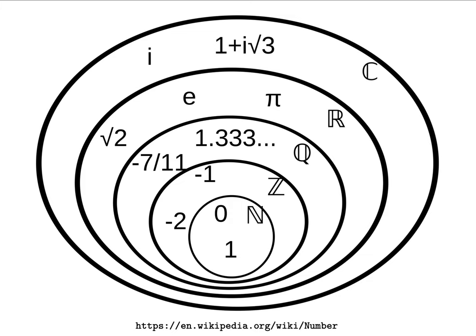The rational numbers sit inside the real numbers, which include numbers such as the square root of 2, e, and pi. And finally, all of this sits inside the largest set we'll consider — the complex numbers — which includes numbers such as i, which is the square root of minus 1, and 1 plus i times the square root of 3, where 1 and the square root of 3 are both real numbers.